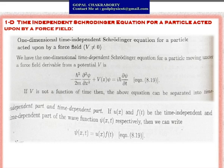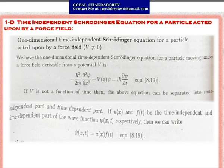This equation was already derived in detail in my last video class. Those who missed that class, please go through it to understand how we derive this equation. Here I have directly considered that time-dependent Schrödinger equation. If V is not a function of time, then the above equation can be separated into a position-only part and a time-dependent part. The wave function ψ can be represented as a product of position and time: ψ(x,t) = u(x)·f(t), where u is a function of position and f is a function of time.